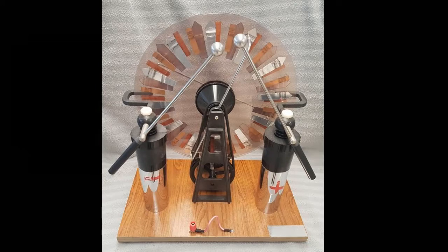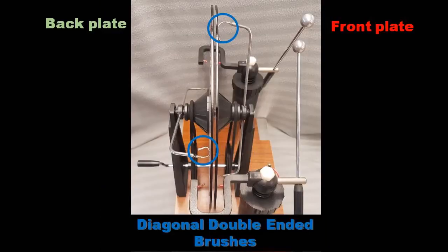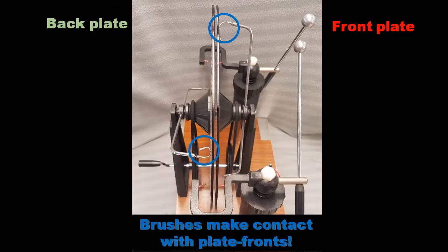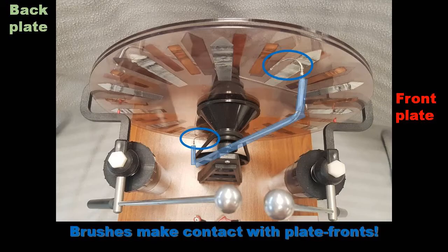The charges that accumulate on the sectors are moved by the diagonal double-ended brushes that are directly in contact with the plates and sectors at ten o'clock and four o'clock as the plates spin.